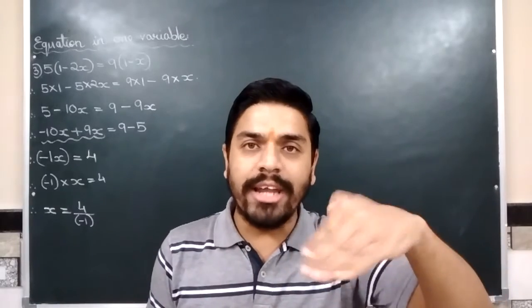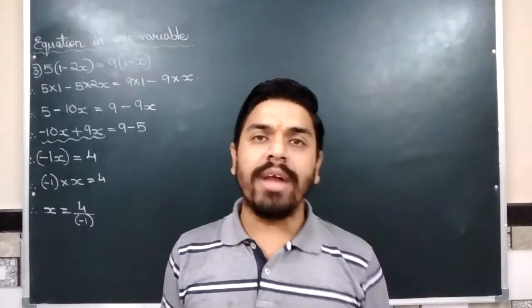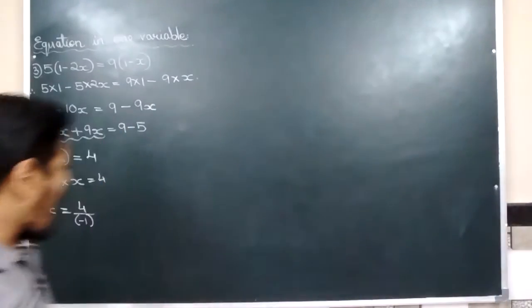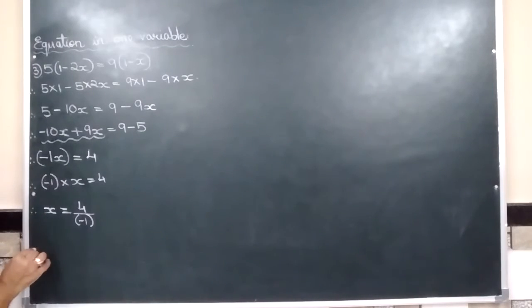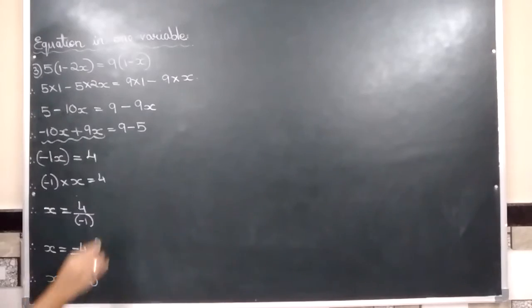So that minus sign which is in the denominator, shifts to the numerator. तो आपका अगला step बन जाएगा. ये minus sign denominator से निकल का चली जाएगी. Numerator upon 1 and denominator का 1 is never written. कभी नहीं लिखा जाएगा. Hence, the answer to this equation is negative 4.